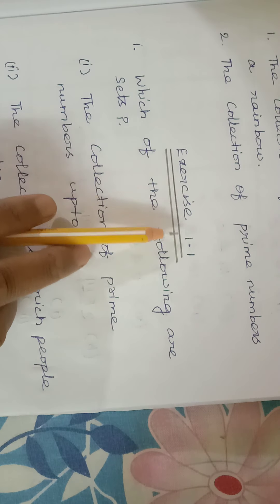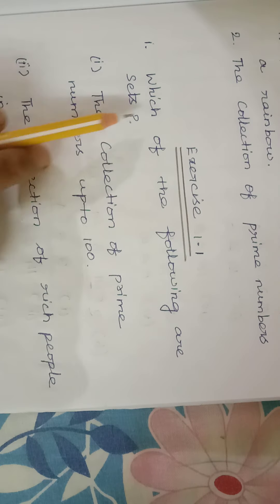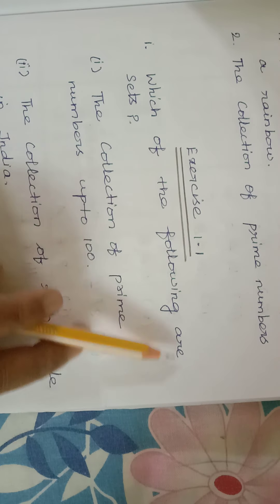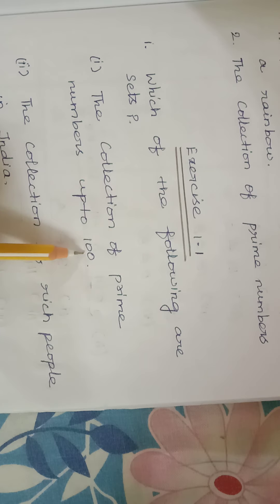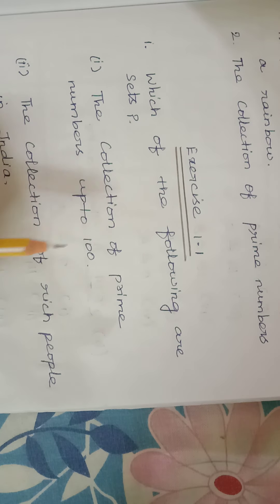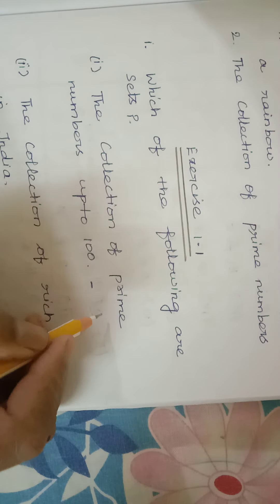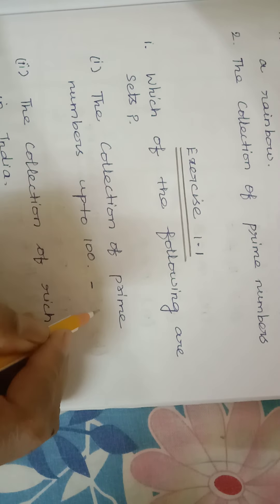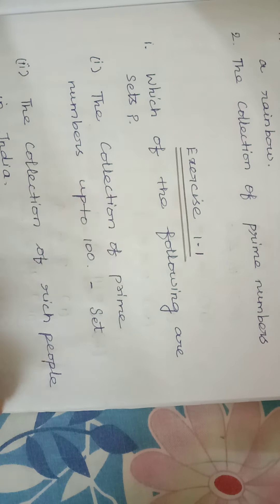Regarding set, Exercise 1.1, first sum — we can solve it now. Which of the following are sets? The collection of prime numbers up to 10. Yes, we can tell the prime numbers up to 10. We can define and write those numbers, so we can call them a set.